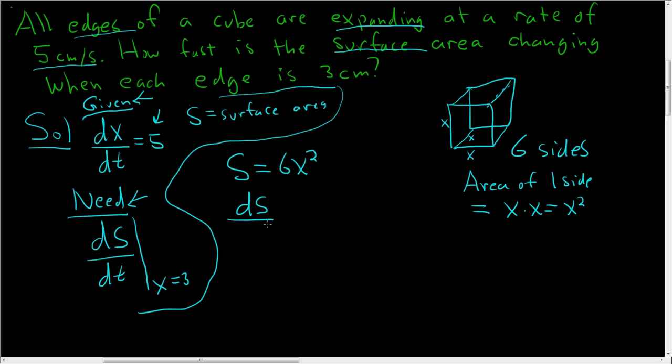So dS/dt, we'll differentiate with respect to time. That's going to be 12x times dx/dt. That's the chain rule or implicit differentiation. All right, at this point we're ready to plug in dx/dt. We know what that is, that's 5. So dS/dt is 12x times 5. That will be 60x.